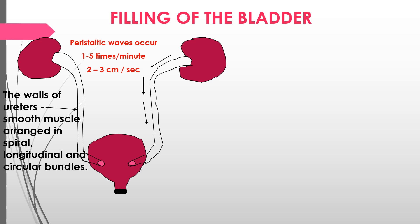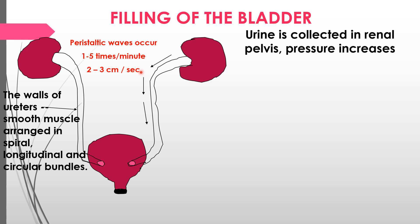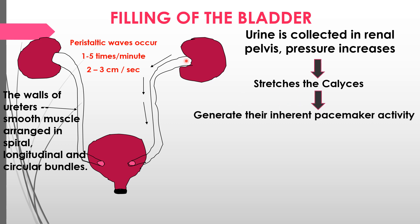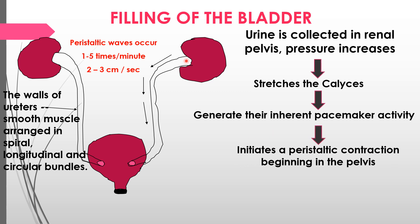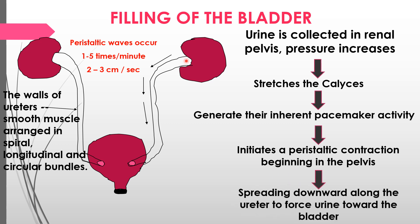Filling of the bladder begins with the ureter. The smooth muscle of the ureteral wall is arranged in spiral, longitudinal, and circular bundles. Peristaltic waves occur 1 to 5 times per minute at 2 to 3 cm per second. Urine collected in the renal pelvis increases pressure and stretches the calyces, generating internal pacemaker activity that initiates a peristaltic contraction beginning in the pelvis and spreading downward along the ureter to force urine into the bladder.